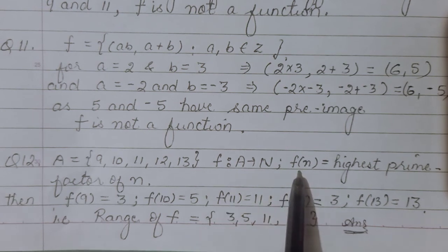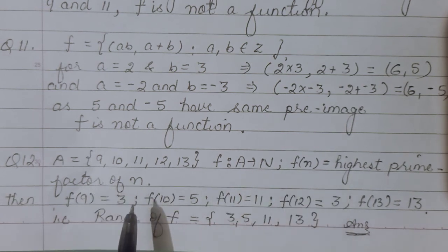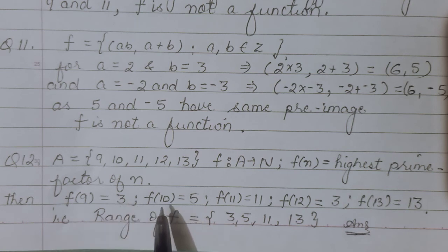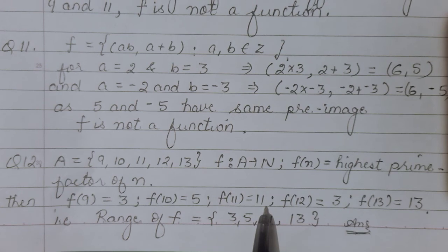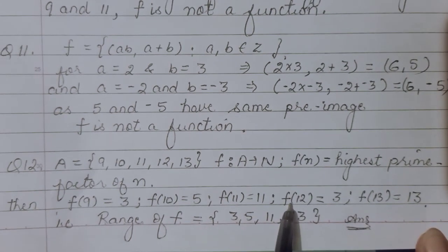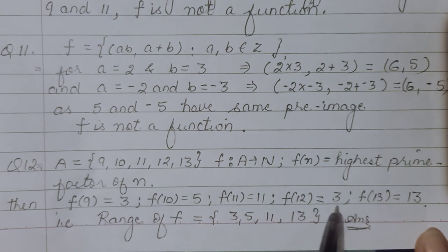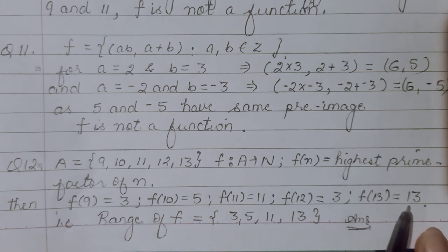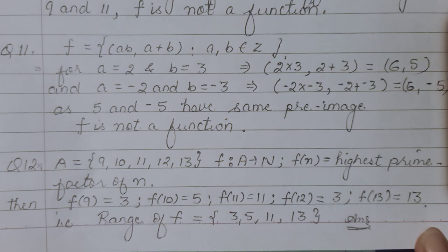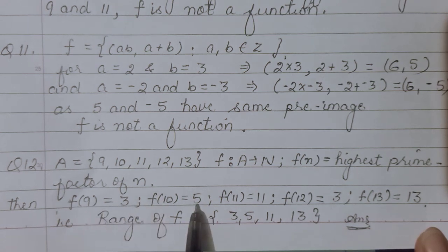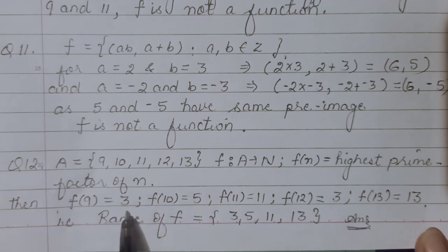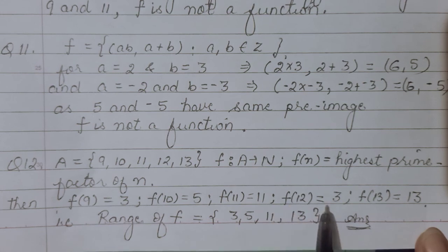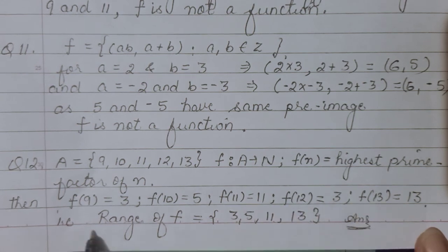Finding the images: f(9) - highest prime factor of 9 is 3 (since 9=3×3). f(10)=5. f(11)=11 (11 is prime). f(12)=3 (since 12=2×2×3). f(13)=13 (13 is prime). The range is the collection of images: {3,5,11,13}. We don't repeat 3. This becomes the range of the given function.